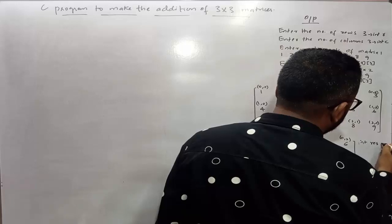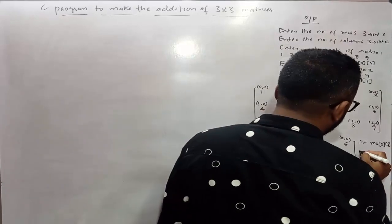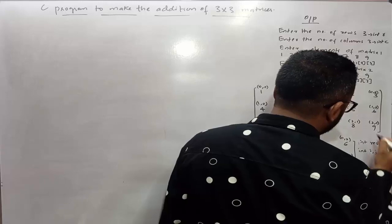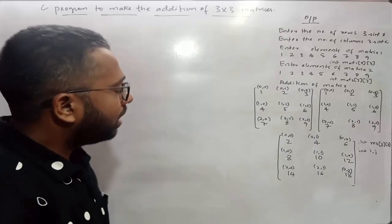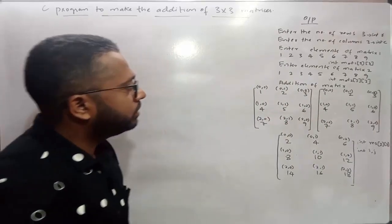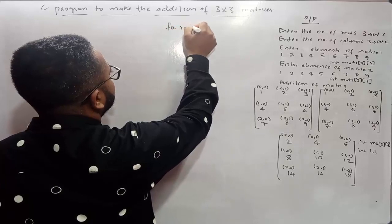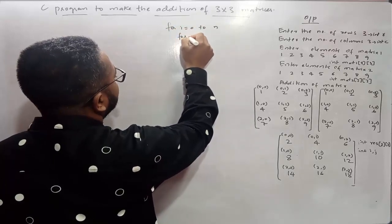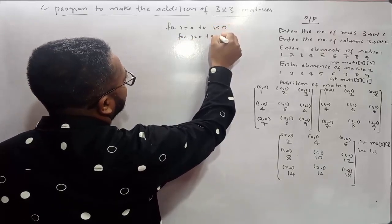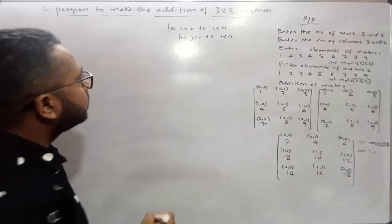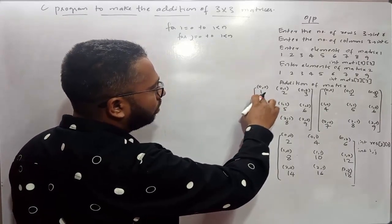To store the resultant matrix we need to create one more array — integer resultant[3][3]. We also need a few other variables: i and j. So these are all the variables required to write this program. To make the addition of these two matrices we just require two for loops. The first for loop will iterate over i from 0 to n, and then the second nested for loop will iterate over j from 0 to n.